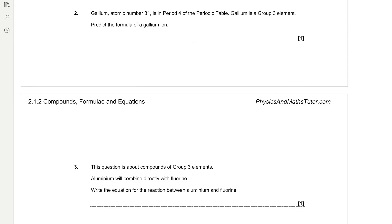Gallium atomic number 31 is in period four of the periodic table. Gallium is a group three element. Predict the formula of a gallium ion. If it's in group three then that means that it's got three outer shell electrons which it can lose. So a gallium ion is going to have the formula Ga3 plus.